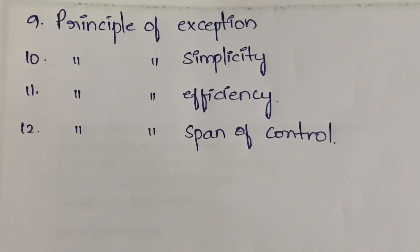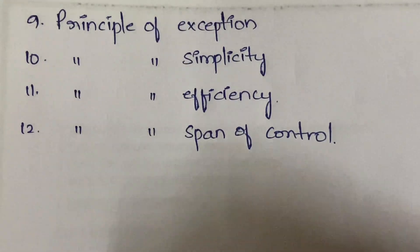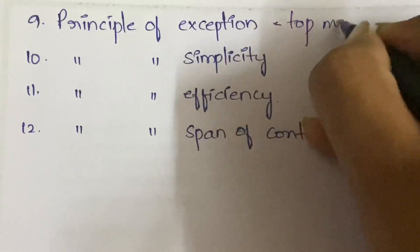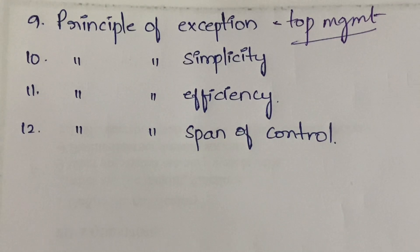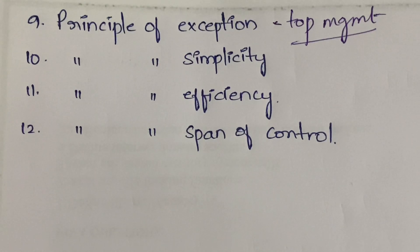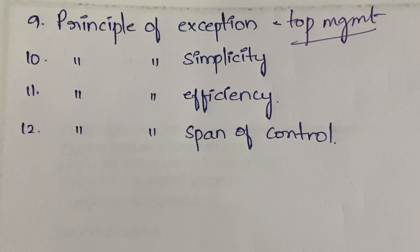Next is the principle of exception. Top management should come into the picture only when something is going wrong — if there is a mistake or a conflict. Top management should not be called for each and every small thing, because they already have a lot of decision-making work. Calling them for trivial matters distracts them. They should be involved only in exceptional cases.